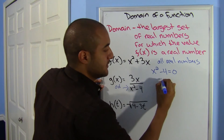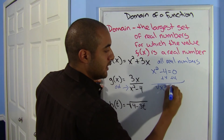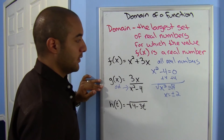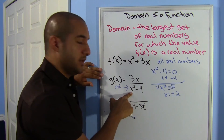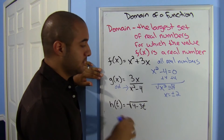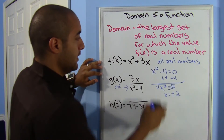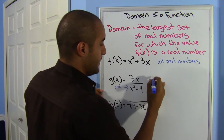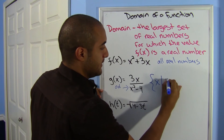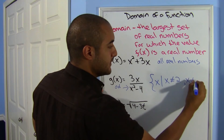Solving x squared minus 4 equals zero: add 4 to both sides, x squared equals 4, take the square root, x equals positive and negative 2. If you put 2 in the denominator, 4 minus 4 is 0 — that's a no-no. Same for negative 2: (negative 2) squared minus 4 is also 0. So the domain is all real numbers such that x is not positive 2 and also not negative 2.